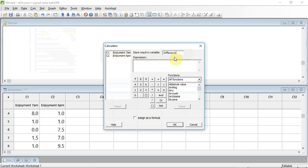I'm now going to enter the expression we want. I'm going to click the expression box. I'm going to take the value in C1, Enjoyment Rating at 7am, select it and press the Select button. Now to get the difference, I need to take away the Enjoyment Rating from 6pm. So I'm going to press the Subtract button to add Subtract to the expression, then select the Enjoyment Rating at 6pm and press Select. I'm now ready to press OK.